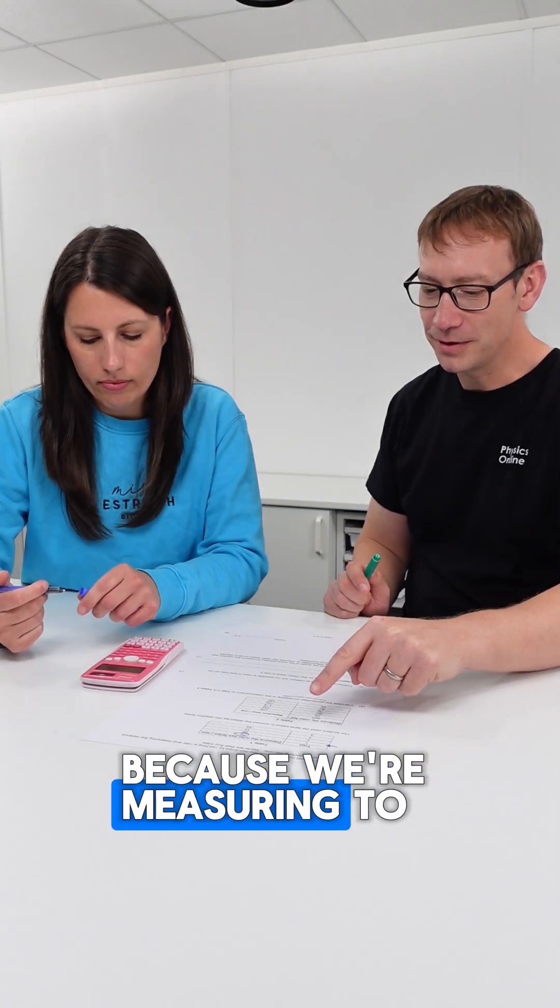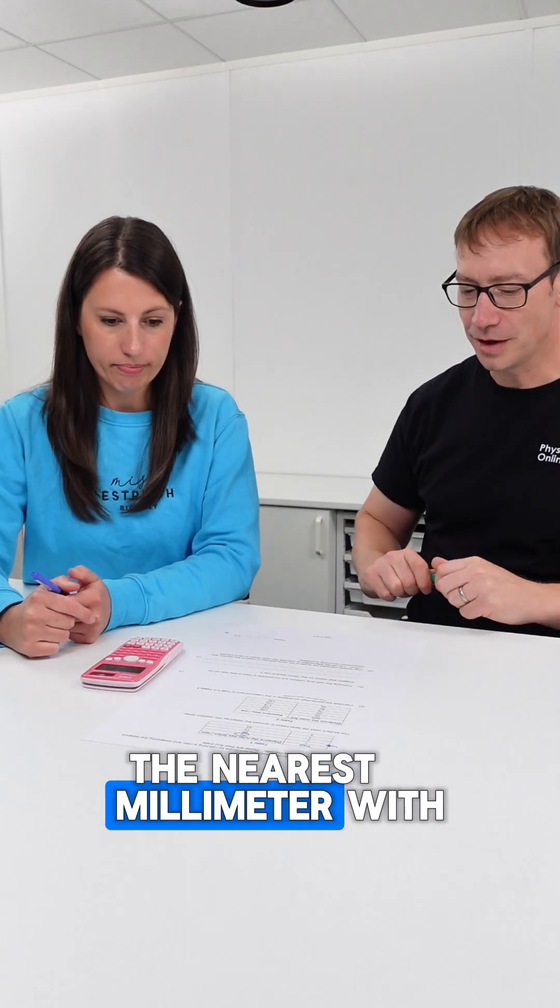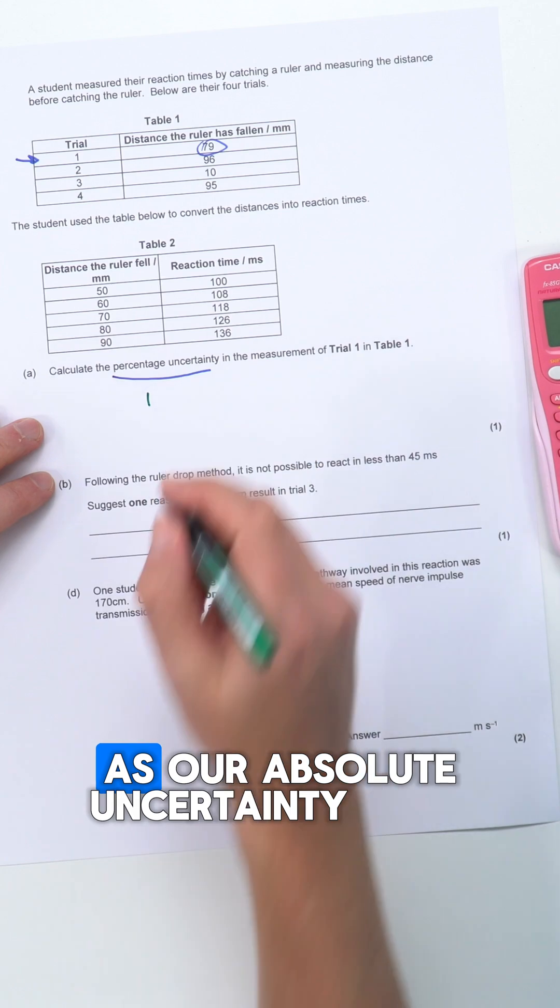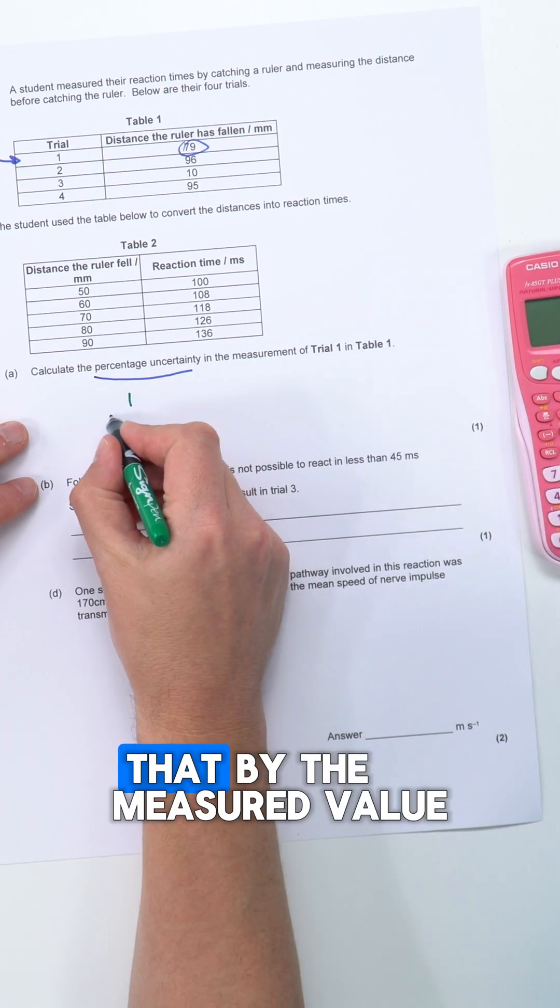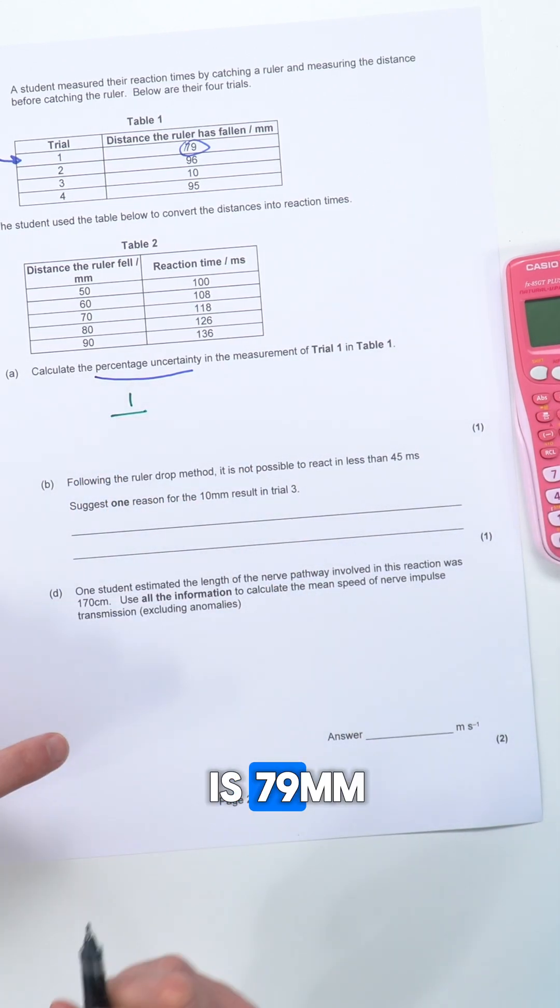I would say for this one because we're measuring to the nearest millimeter with that ruler, we're going to have one as our absolute uncertainty and we're going to divide that by the measured value which in this case is 79 millimeters.